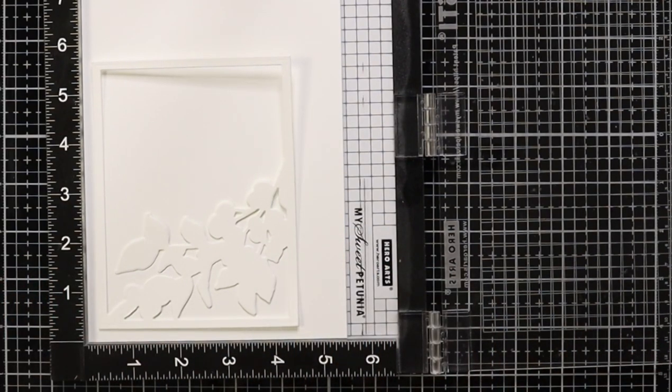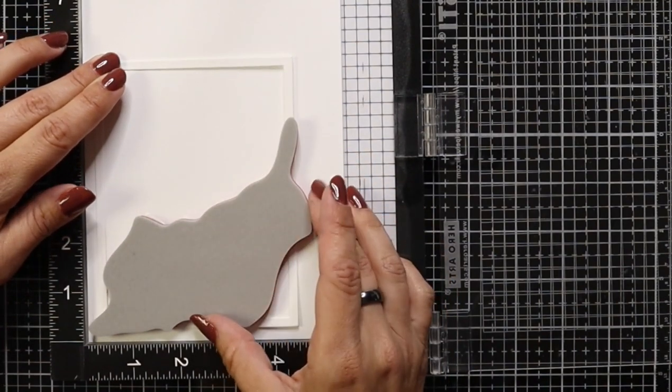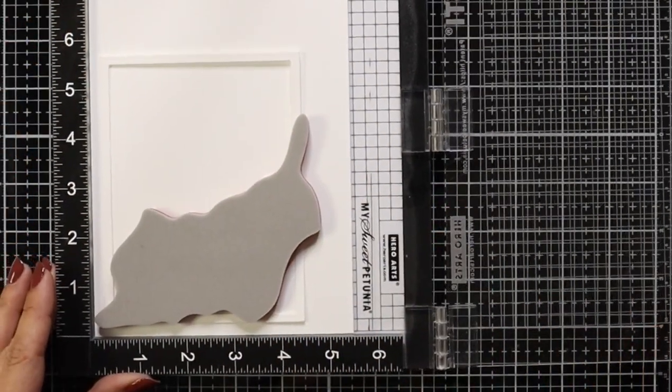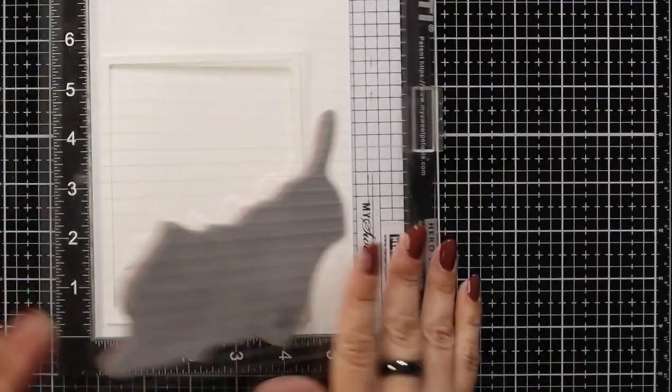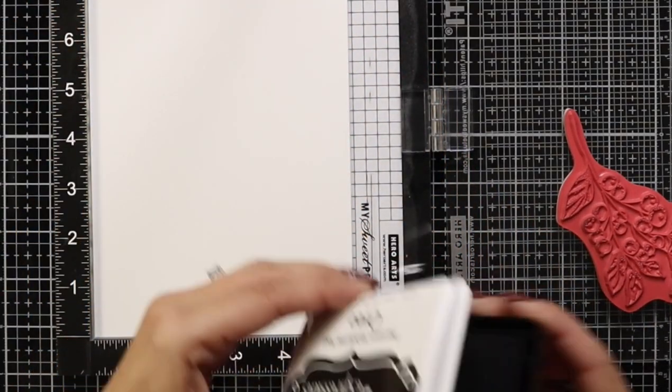Now the easiest way I found to get this lined up nicely is I die cut that Seasonal Sprig die out of white cardstock and then I placed that on top of some sugar cube cardstock in my Misti tool and lined up my stamp that way. That just gives me a guide to work with.